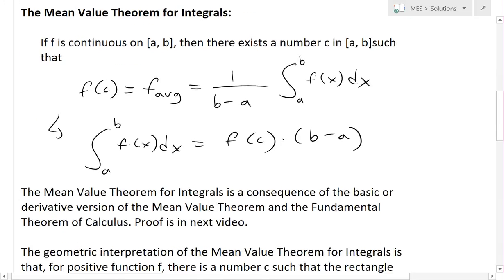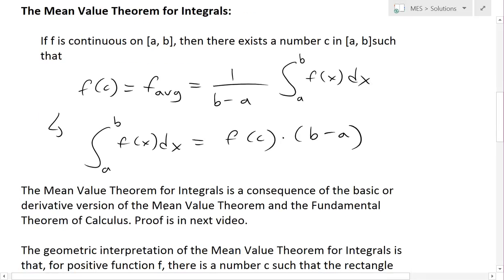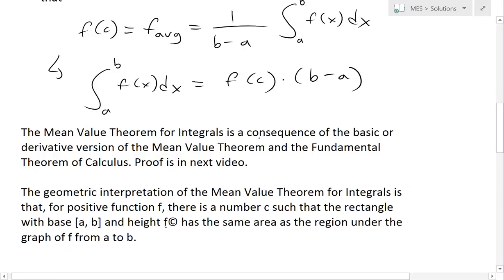And basically, so this is the Mean Value Theorem. And now this Mean Value Theorem is a direct consequence of the basic or the derivative version of the Mean Value Theorem. You could see that one in the video link below and also the Fundamental Theorem of Calculus. I'll do the proof in the next video.